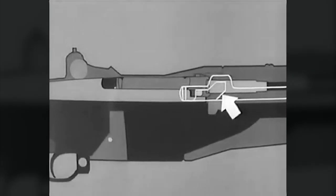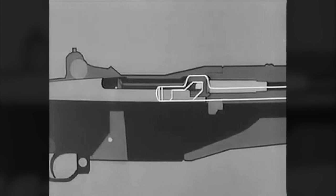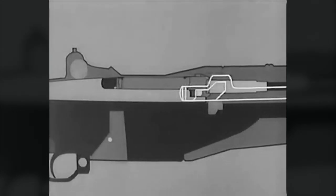Then the cam surface in the rod handle hits the operating lug. The bolt turns, unlocking the lugs from the receiver. Watch it again.